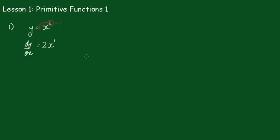Now just say I want to go back the other way. That's what we mean by primitive, go back, find the primitive of this new function, the derivative function.